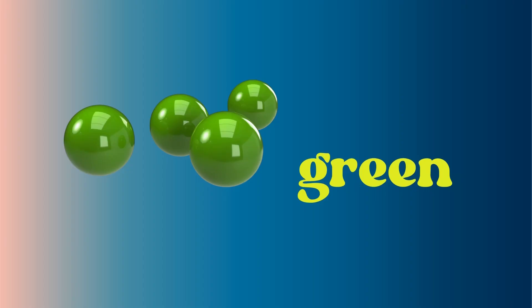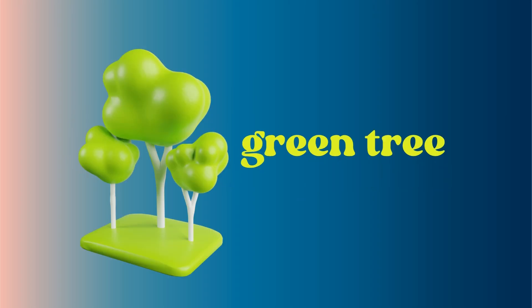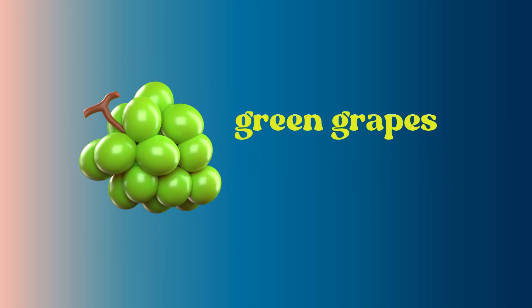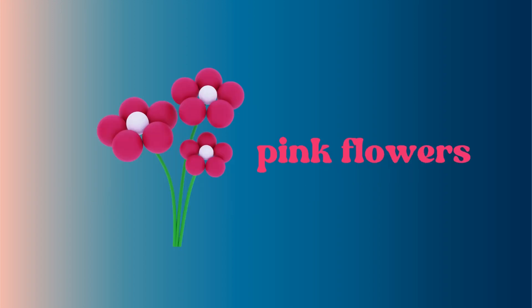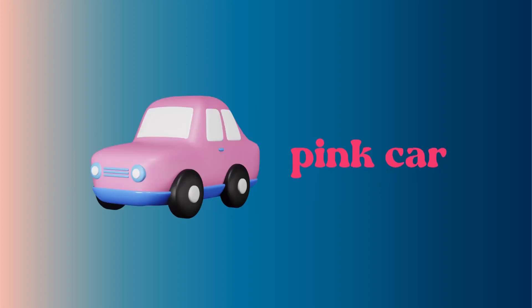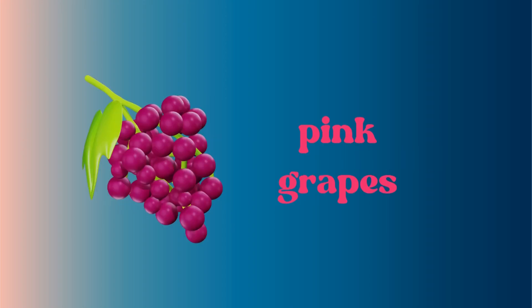Colors. Green color — let's see what else do we have in green color. Yeah, trees. Green grapes.